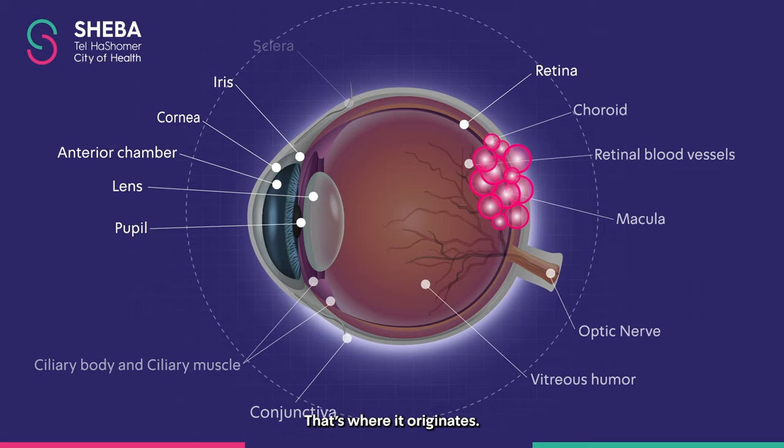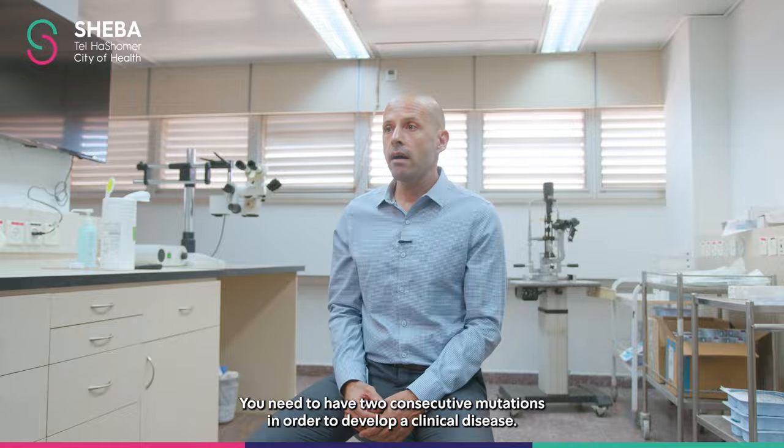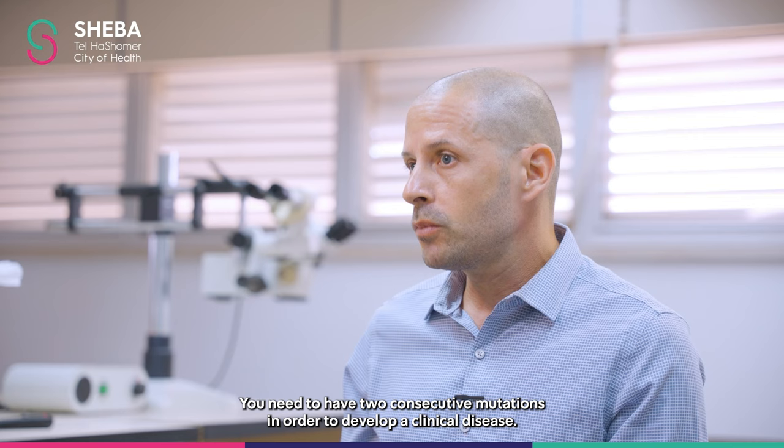It's a genetic mutation. You need to have two consecutive mutations in two alleles in both genes — the RB1 gene, located on chromosome number 13. You need to have two consecutive mutations in order to develop a clinical disease.